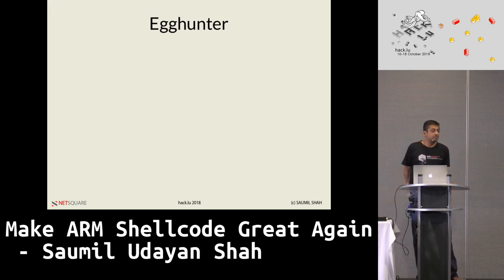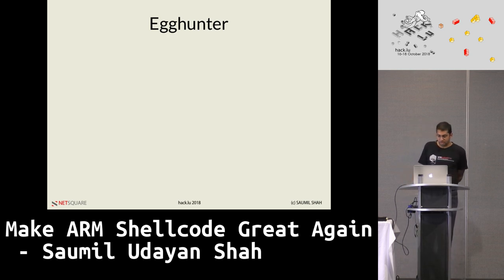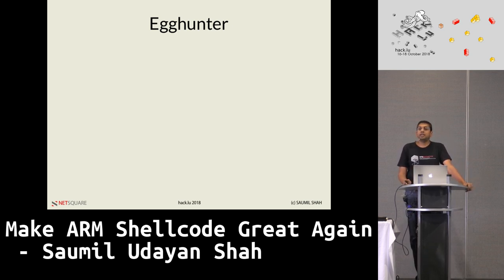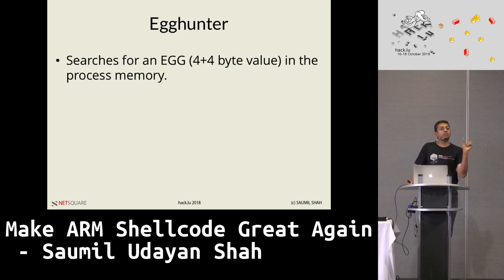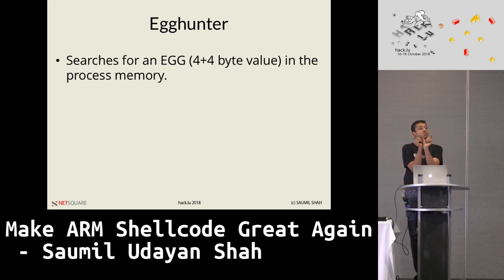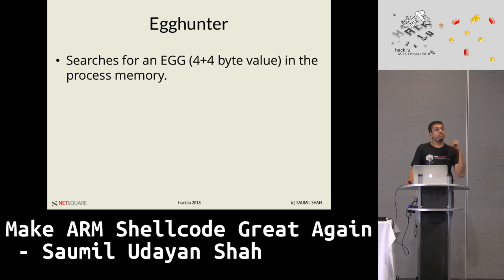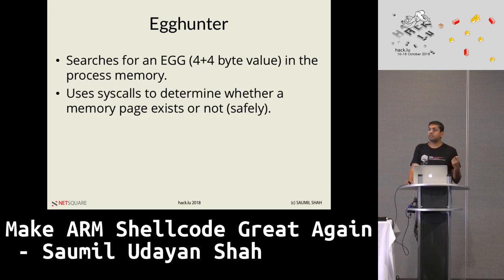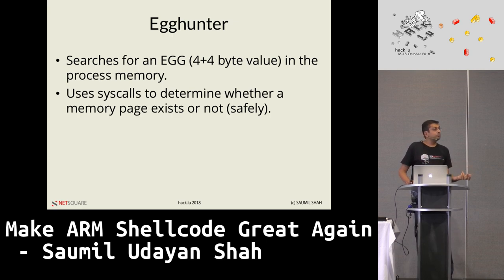The egg hunter has been invented many years ago. You load the real shellcode anywhere you like in memory where there's space, but you prefix the shellcode with two markers — two eggs — two four-byte values concatenated successively with one another. The egg hunter code searches memory page after page to see if these two markers appear in succession. If they do, it knows the shellcode is there and jumps to it.